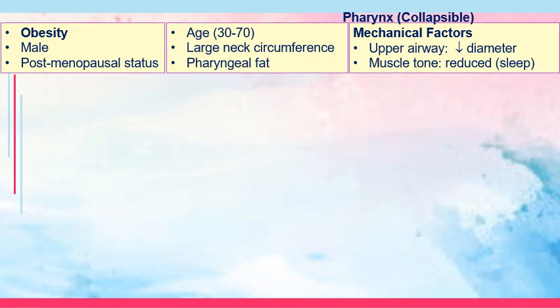Let's talk about the pathophysiology of obstructive sleep apnea. The most common and dominant factor is obesity, common among males and those who are postmenopausal among women, ages 30 to 70, and among patients with large neck circumference and pharyngeal fat. These predisposing factors lead to obstruction of the airway because of compression of the tongue or enlargement of surrounding tissues. There are also mechanical factors: during sleep, the upper airway's diameter tends to decrease.